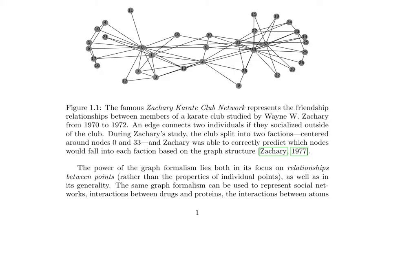This picture from the book is one of the old instances in which a graph was useful in making inferences. This is the Zachary Karate Club Network, which represents the friendship relationship between members of a karate club. This was gathered from 1970 to 1972, and each edge indicates whether or not two members socialized outside the club. This study indicated that the club split into two factions, with node 0 and node 33 as centers. Zachary was able to correctly predict which node would fall into which faction based on the structure the graph provides.